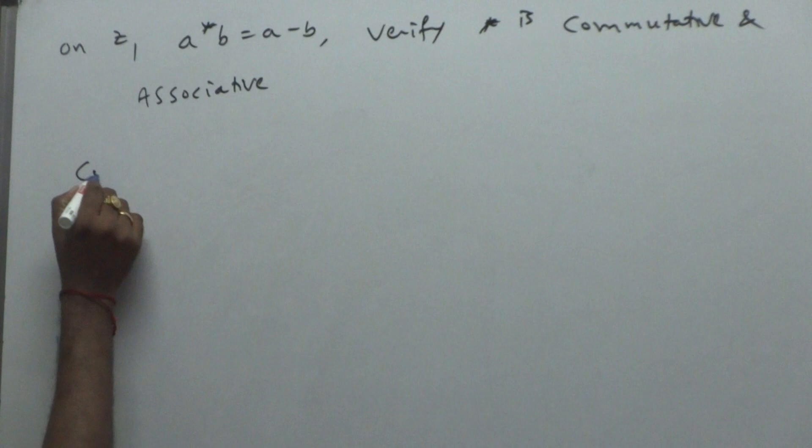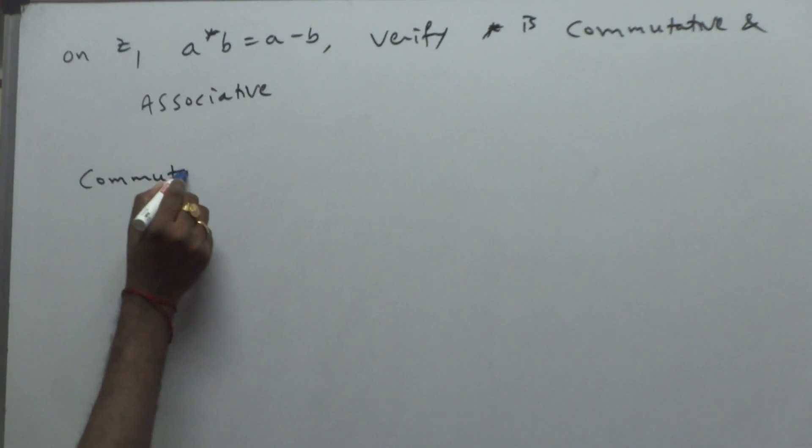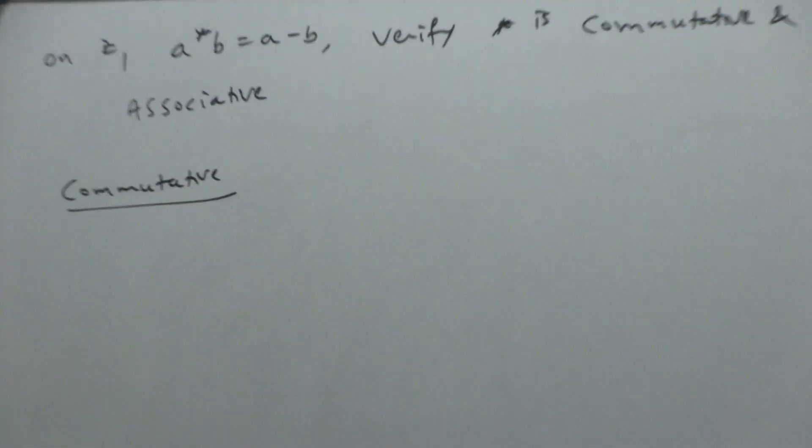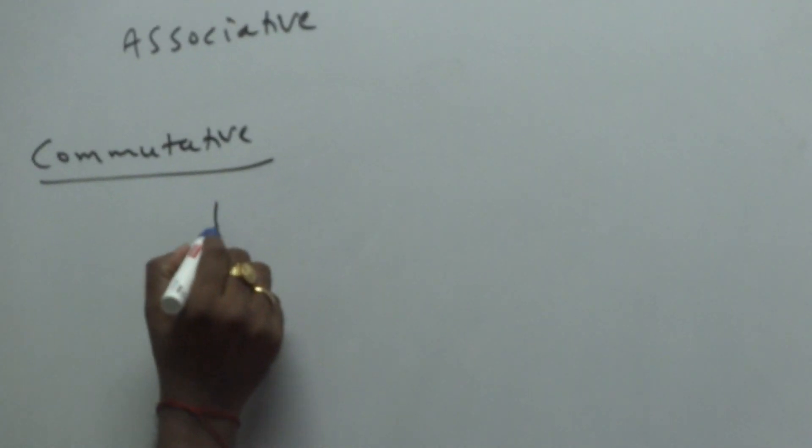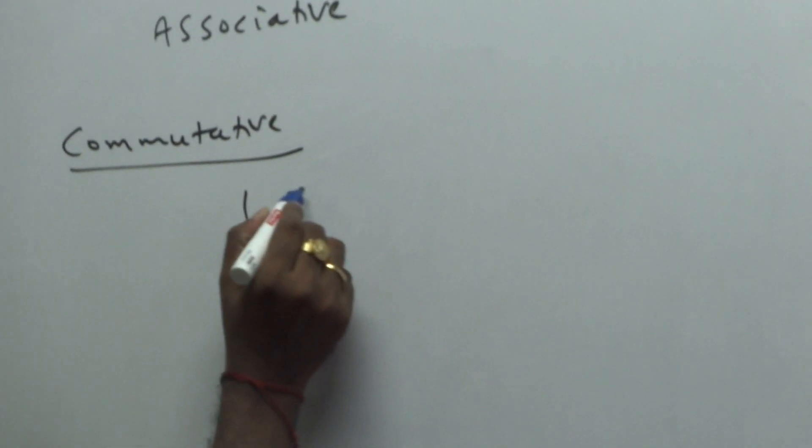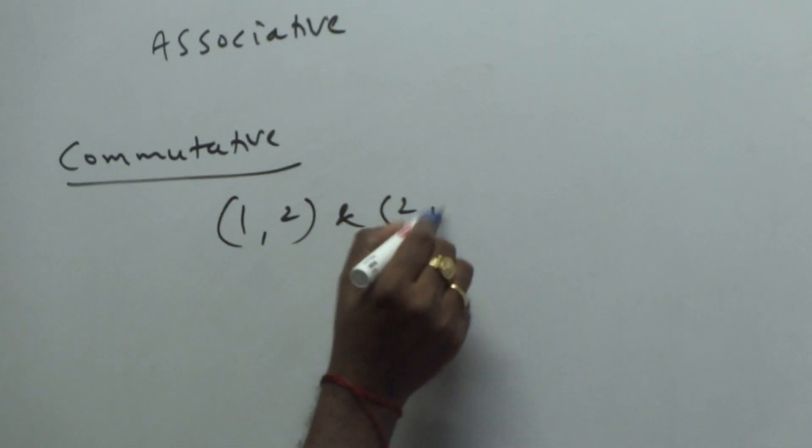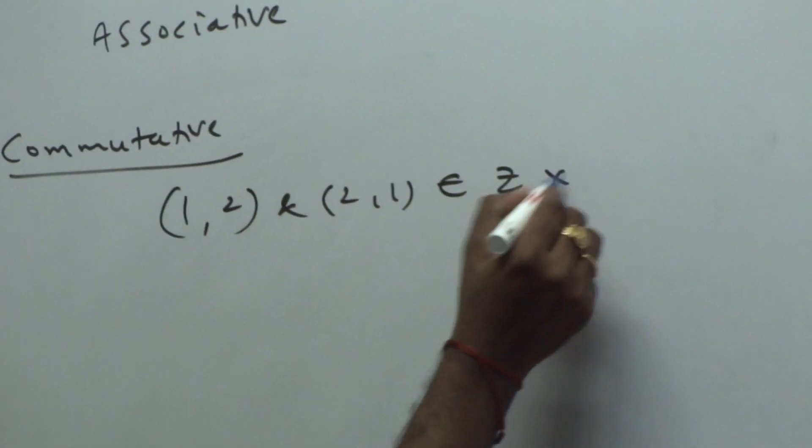First we will prove whether it is commutative or not. Commutative. Take one element: 1,2 and 2,1 belongs to Z cross Z.